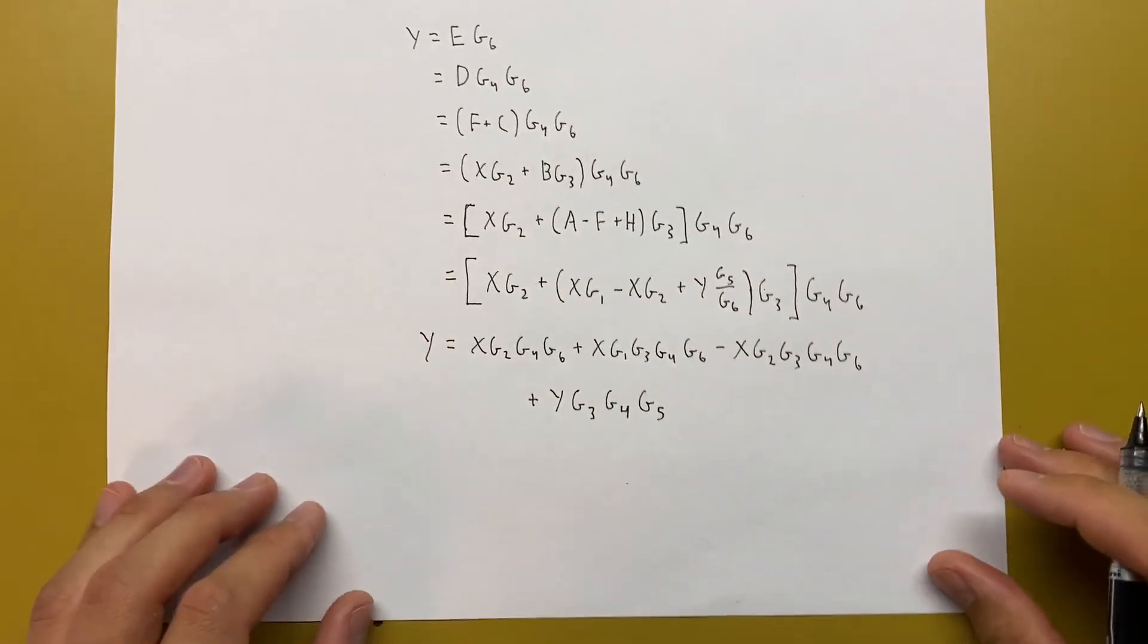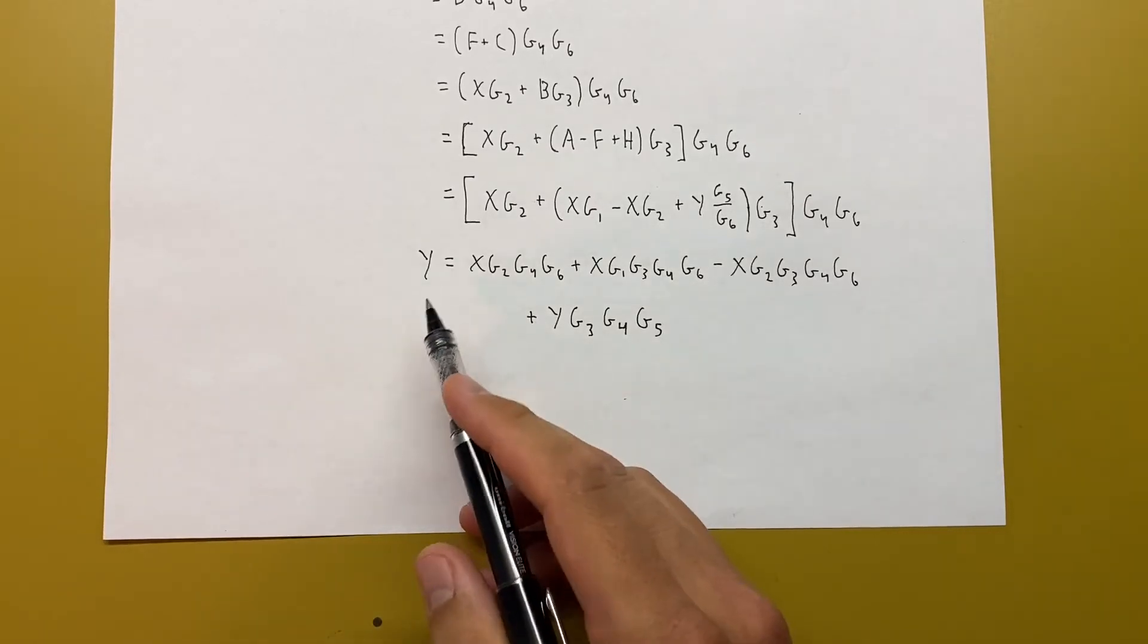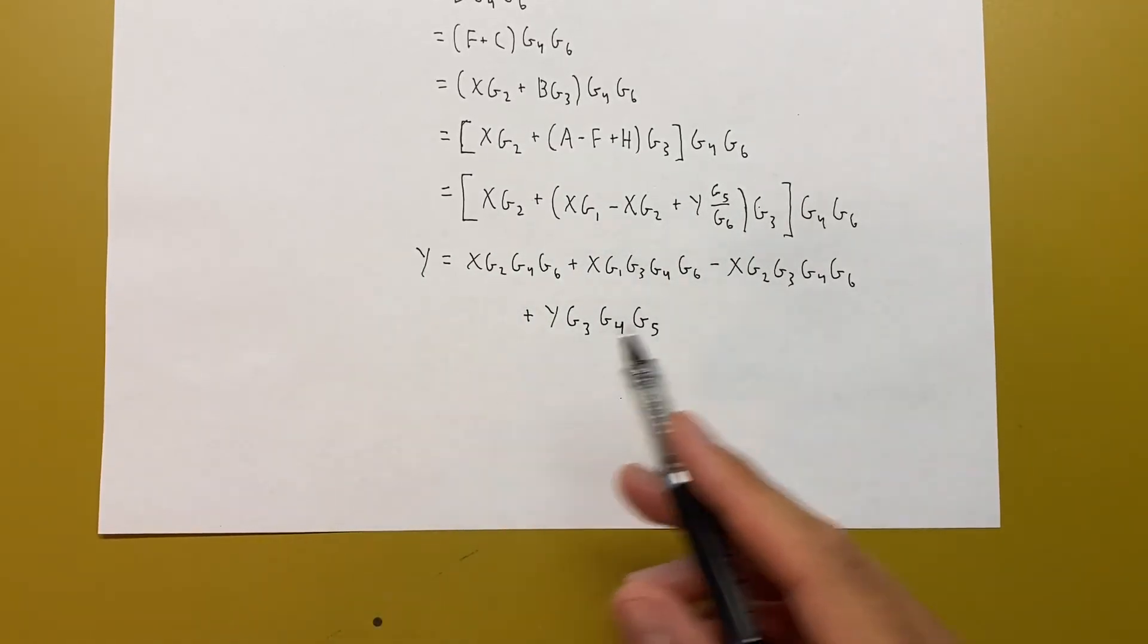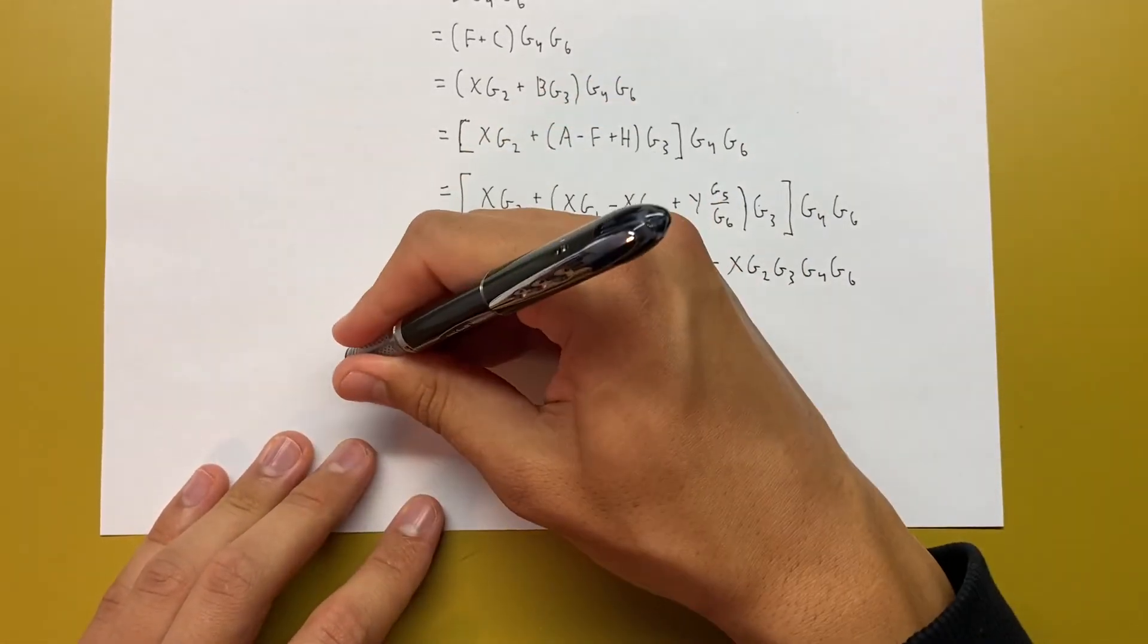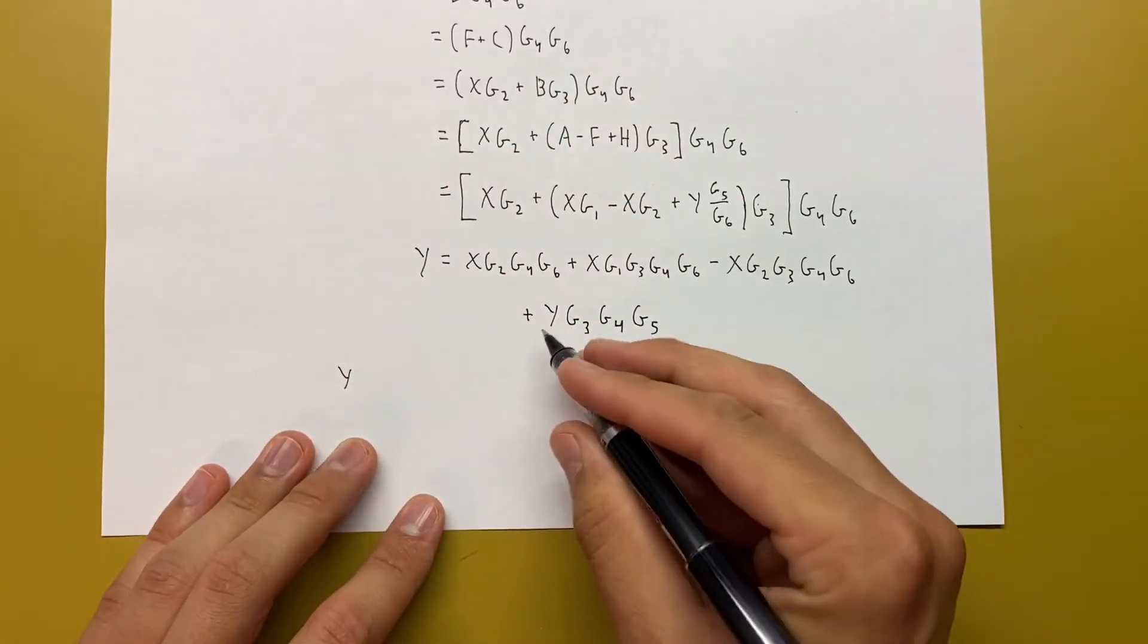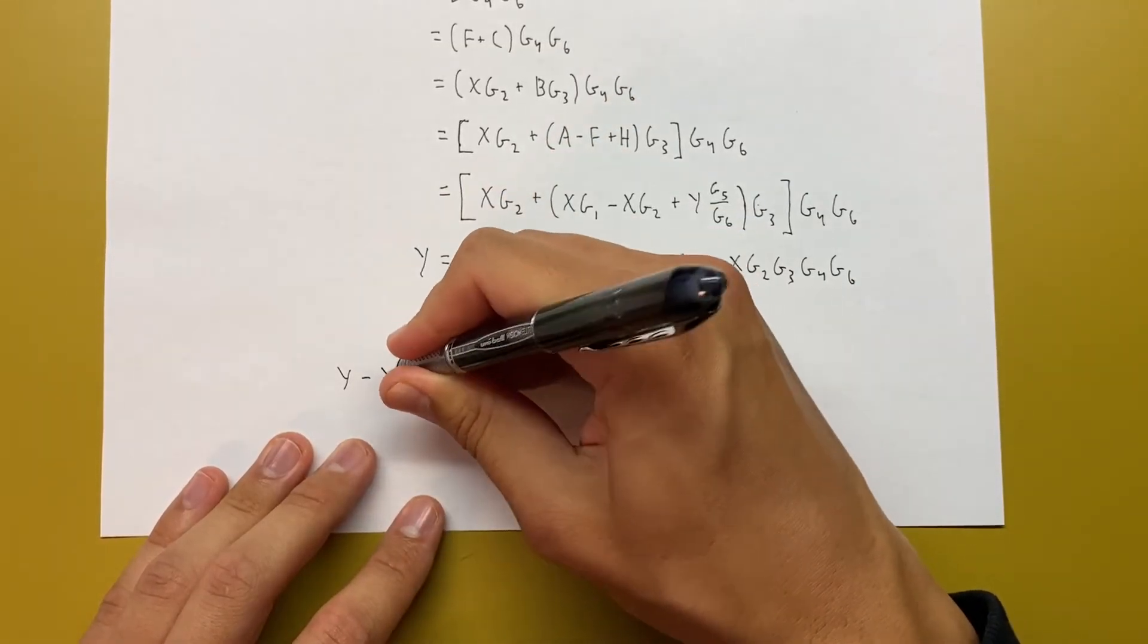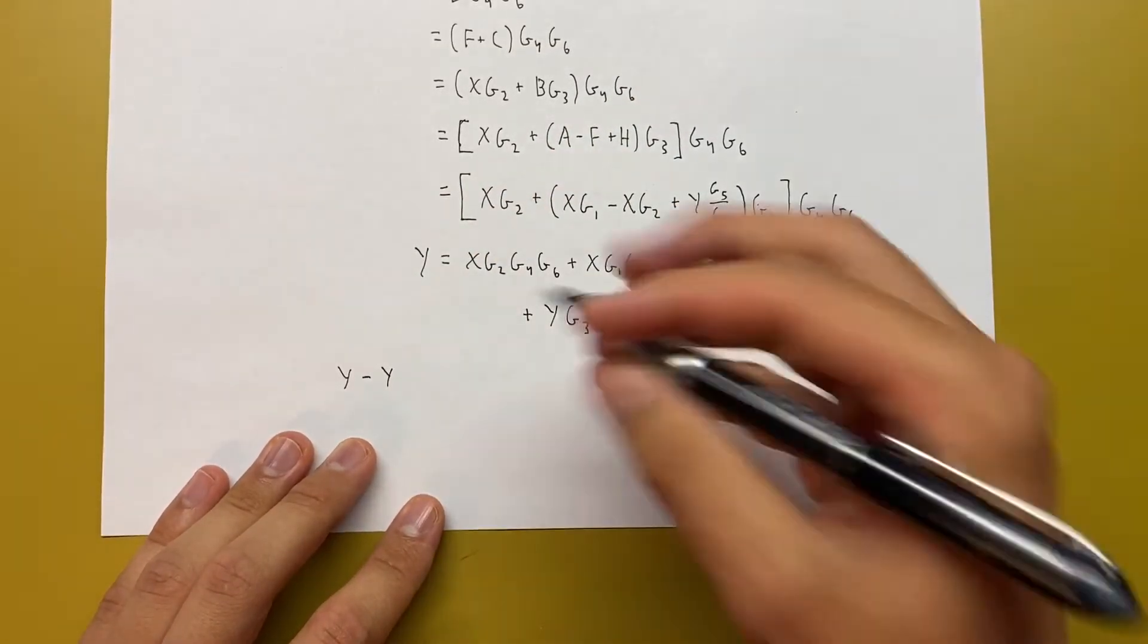From here, I'm going to move all the terms that are in terms of Y to one side and all the terms in terms of X to the other side. On the left side, we'll have Y, and this positive becomes a minus, Y times G3 G4 G5.